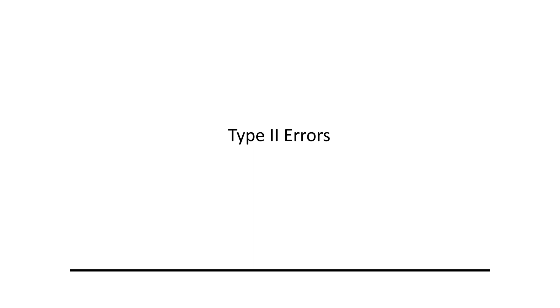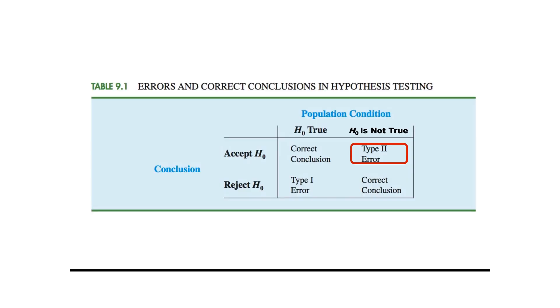In this presentation we'll go over the type 2 error in hypothesis testing. We pointed out in the last presentation that we make a type 2 error if we accept H0 when H0 is not true.